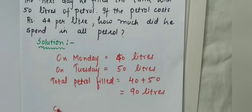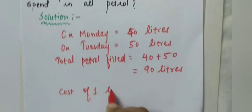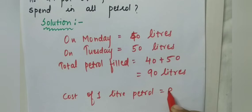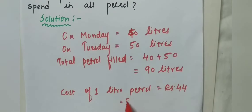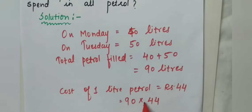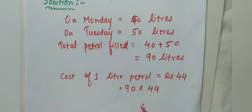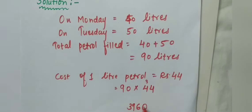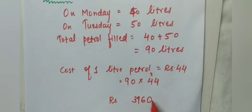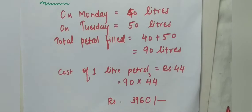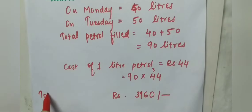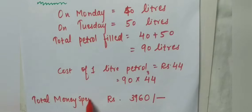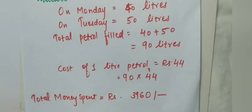Now we know the cost of 1 litre petrol is Rs 44. So we'll multiply 90 into 44. 4 nines are 36, write 6, carry 3. 4 nines are 36, 36 plus 3 is 39, and this 0 will come at the end. So total money spent is Rs 3,960.